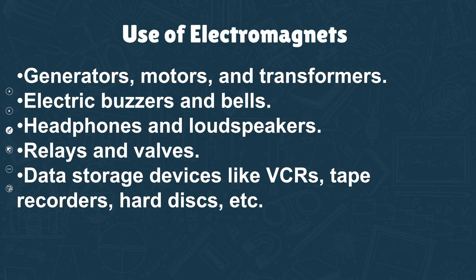Okay, my dear students, that is how we can make an electromagnet. Now let's quickly move forward. Electromagnets in daily life are used in many places. Let's have a look at where electromagnets are used. The use of electromagnets is: they are used in generators, motors, and transformers. They are also used in electric buzzers and bells,